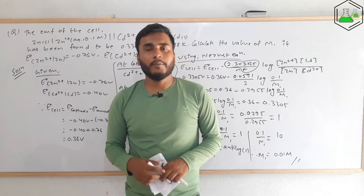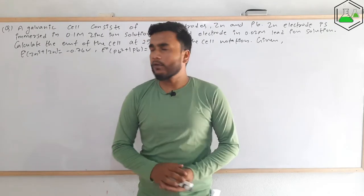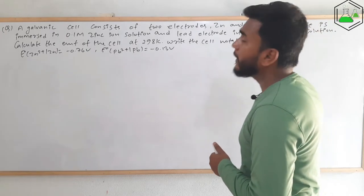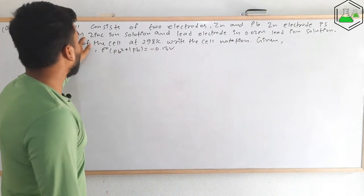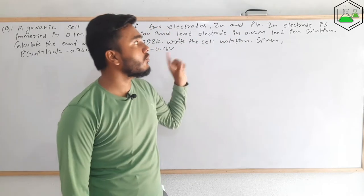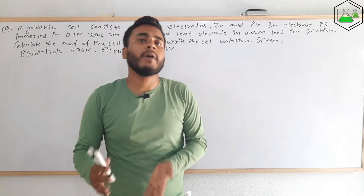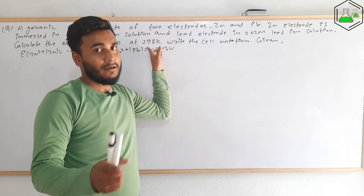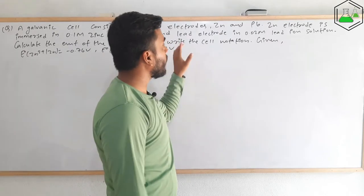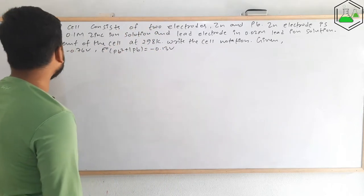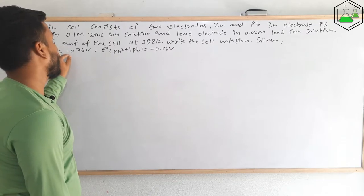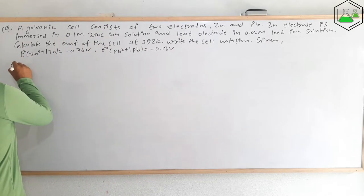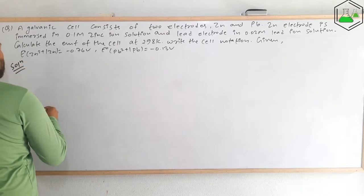Now let's see one more important numerical problem for the examination. A galvanic cell consists of two electrodes: one made of zinc immersed in 0.1 M zinc ion solution, and one made of lead immersed in 0.02 M lead ion solution. We need to calculate the EMF of the cell at 298 K using the Nernst equation and also write the cell notation. E°(Zn²⁺/Zn) = −0.76 V and E°(Pb²⁺/Pb) = −0.13 V.